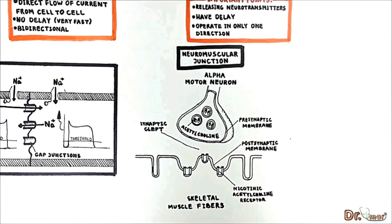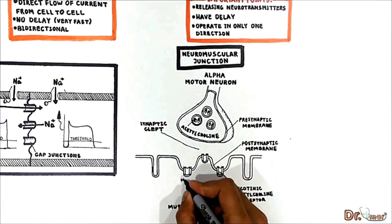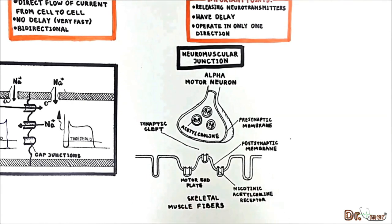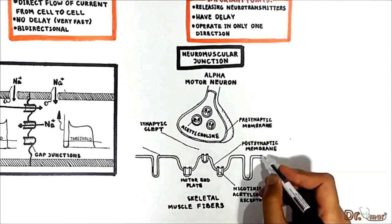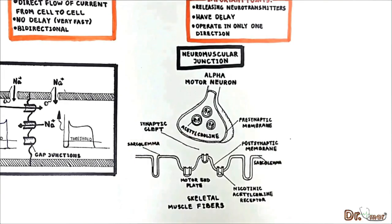Without these receptors neuromuscular nerve transmission is not possible. This specialized region of the muscle fiber is called the motor end plate and if you continue looking at both sides of the motor end plate here we have both the sarcolemma and the t-tubules.